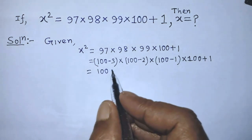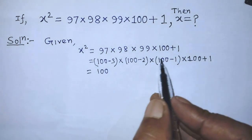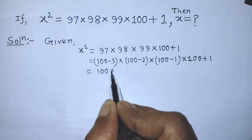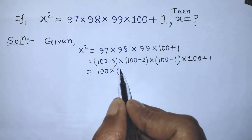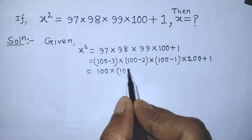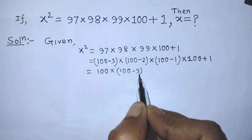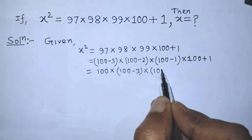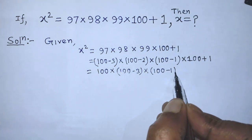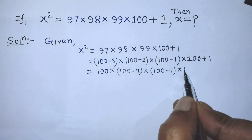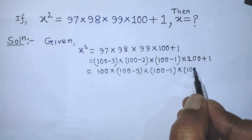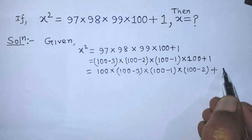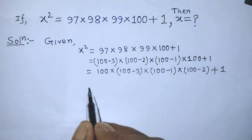After that we can write from this algebraic expression: (100)(100)(100 minus 3)(100 minus 2) plus 1.